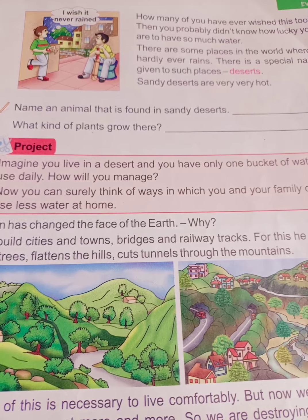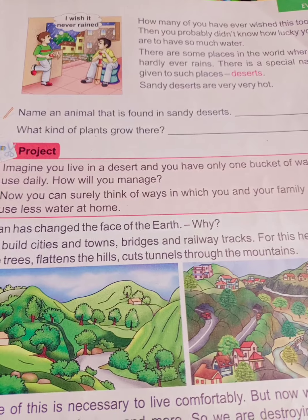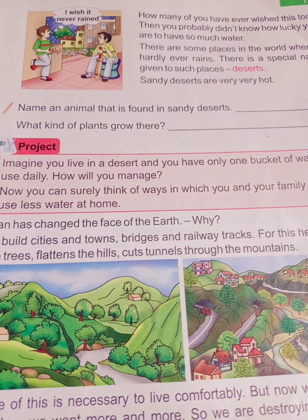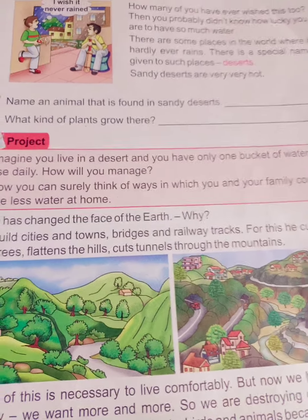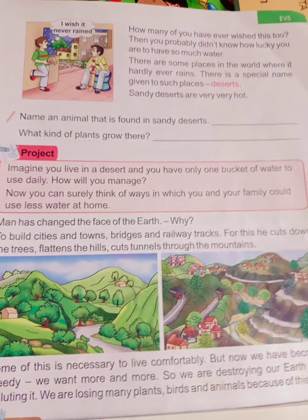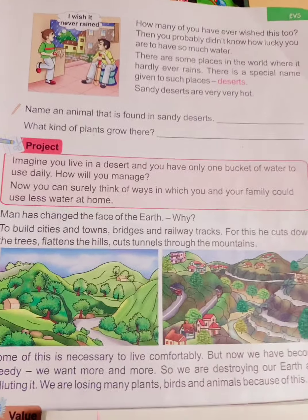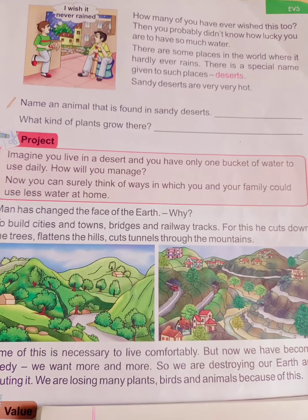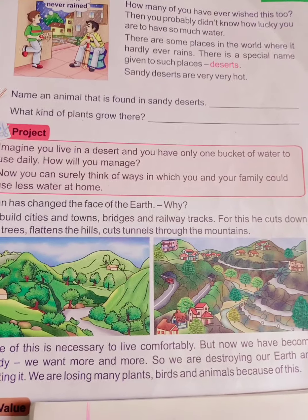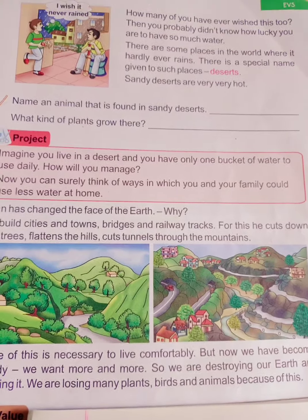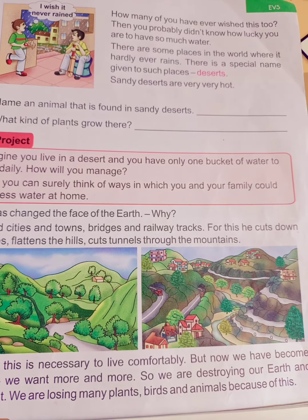There are some places in the world where it hardly ever rains. There is a special name given to such places — we call them deserts. A desert is a very large and dry area of land, usually in a hot region, where there is almost no water, no trees, no plants, and hardly ever any rain.